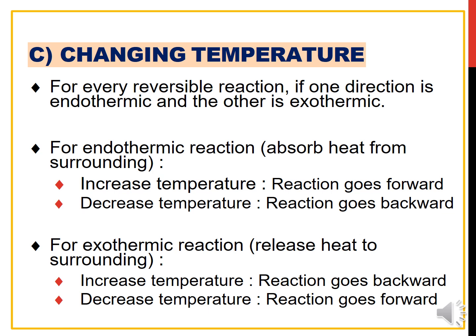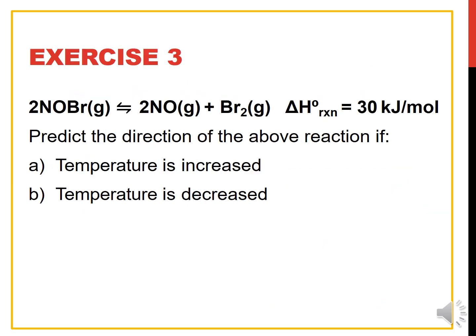For endothermic reactions, decreasing the temperature causes the reaction to go backward, shifting to the left. For exothermic reactions, which release heat to the surroundings, increasing the temperature causes the reaction to go backward, and decreasing the temperature causes the reaction to go forward, shifting to the right.